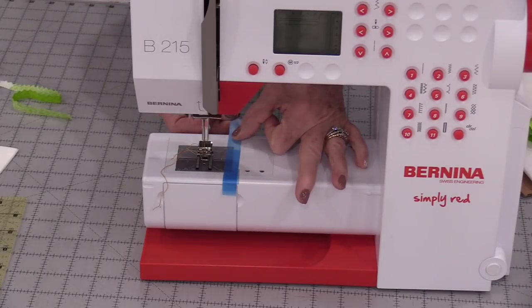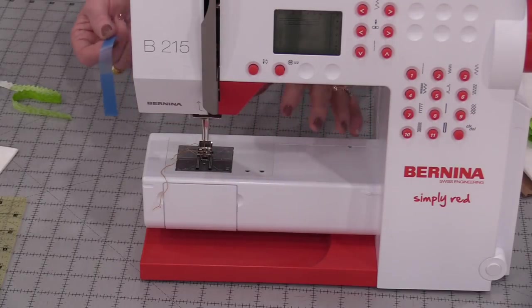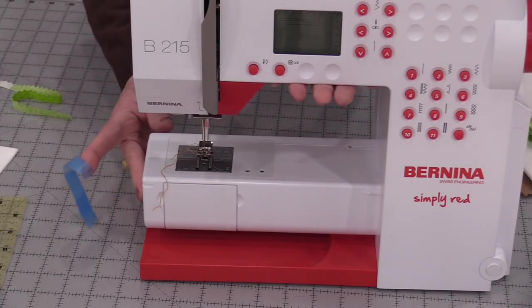That tape will just help us line up that fabric. When we're done it just comes off and it doesn't leave any residue like scotch tape would.